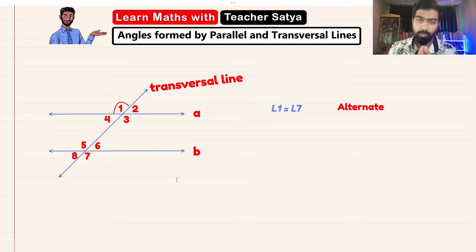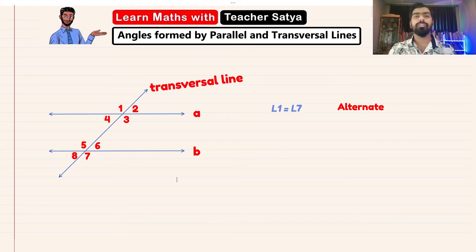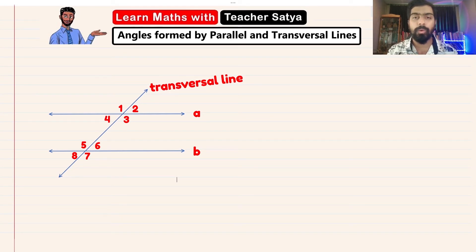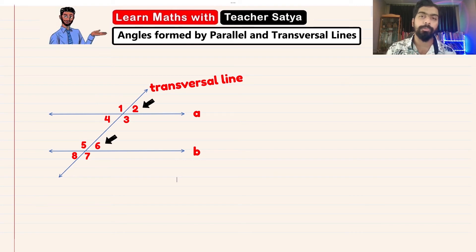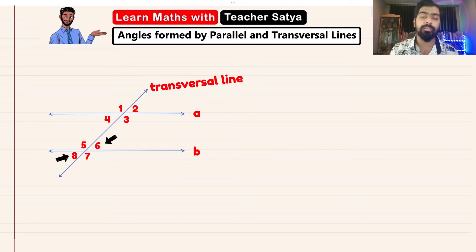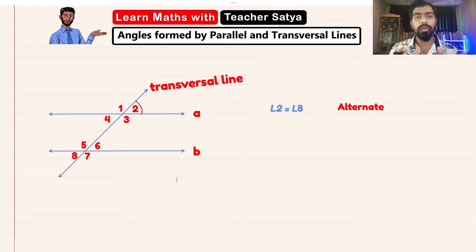So angle 1 will be the alternate angle to angle 7. Now let's find the alternate angle for angle 2. Step 1: find the corresponding angle — angle 2 is corresponding to angle 6. Then find the vertically opposite angle — angle 6 is vertically opposite to angle 8. Therefore, angle 2 is alternate to angle 8, and they are, of course, equal.